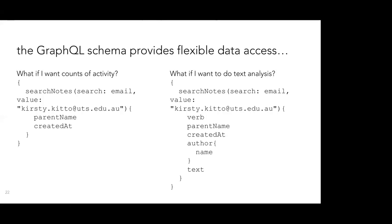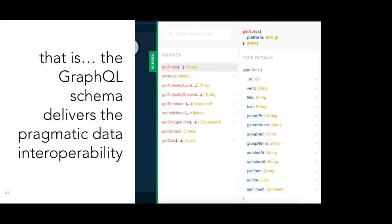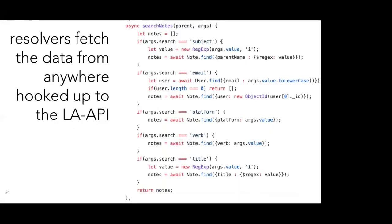Basically what's happening is there's a schema being defined by us around what's important in our learning analytics ecosystem. That schema is extensible. When I'm running the 'get notes' query, I can run it on any of these data sources and get just the data I need for the tool I'm trying to send it to. Then what happens is you've got these resolvers that are fetching data from the backend — basically fetching it from the appropriate place according to where the data came from.